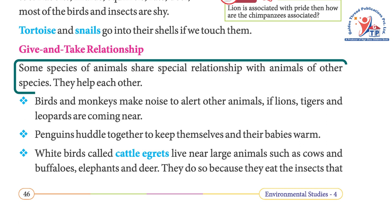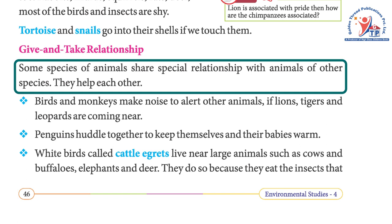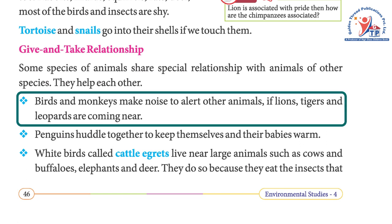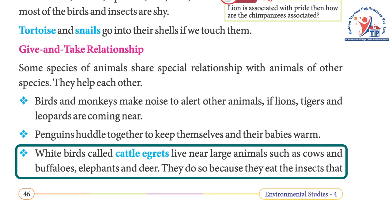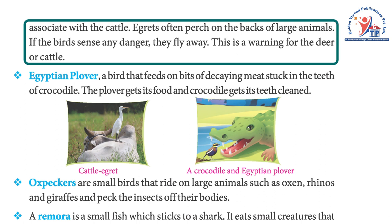Some species of animals share a special relationship with animals of other species — they help each other. Birds and monkeys make noise to alert other animals if lions, tigers, and leopards are coming near. Penguins huddle together to keep themselves and their babies warm. White birds called cattle egrets live near large animals such as cows, buffaloes, elephants, and deer because they eat the insects associated with them. Cattle egrets often perch on the backs of large animals. If the bird senses any danger, it flies away, which serves as a warning for the deer or cattle.